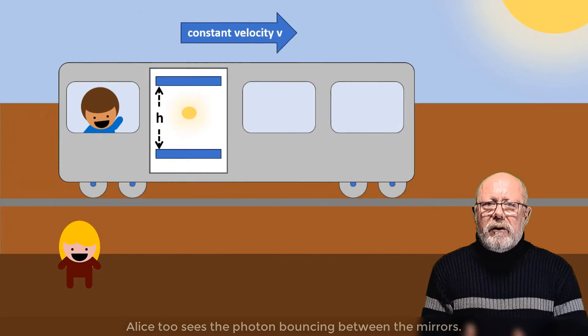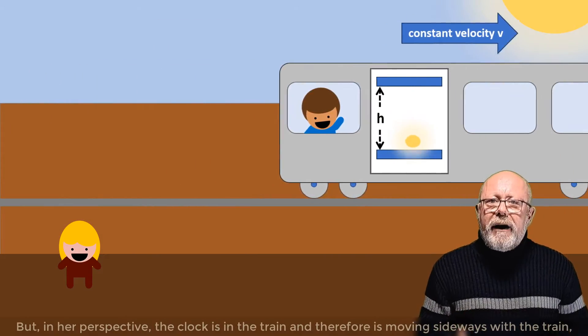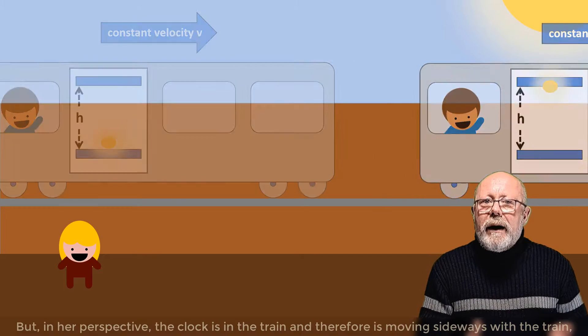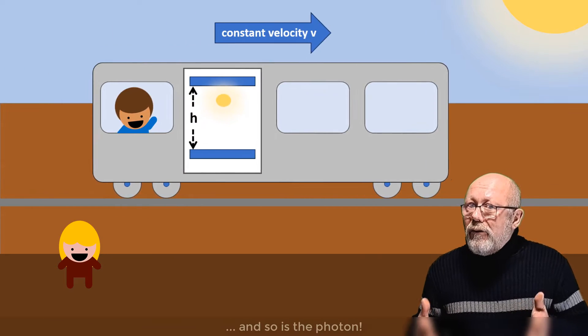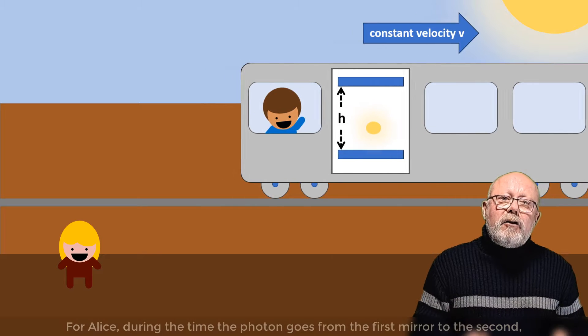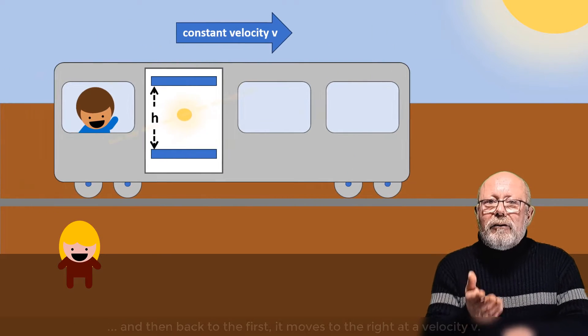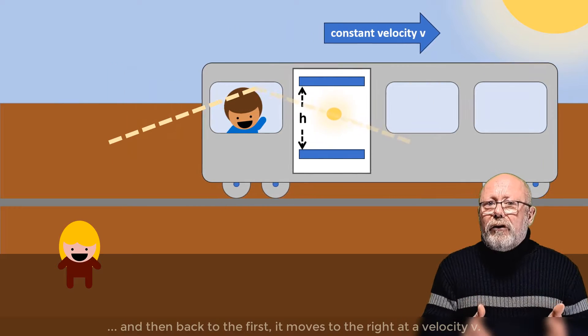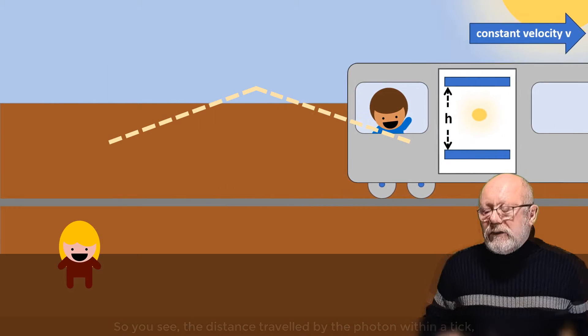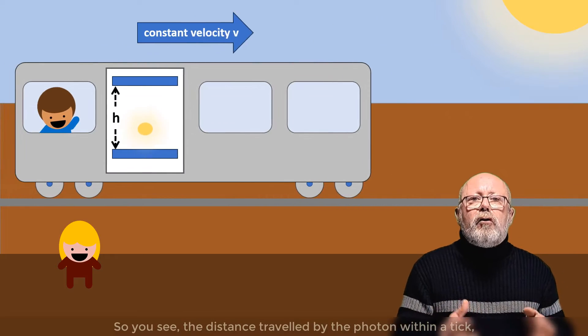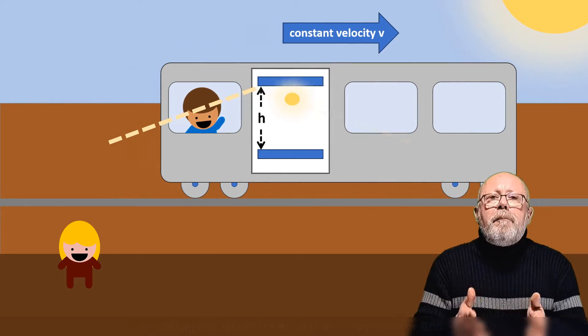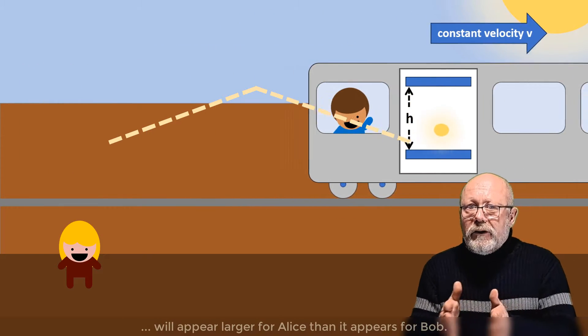Alice, too, sees the photon bouncing between the mirrors. But in her perspective, the clock is in the train, and therefore is moving sideways with the train. And so is the photon. For Alice, during the time the photon goes from the first mirror to the second, and then back to the first, it will have moved to the right at a velocity V. So you see, the distance travelled by the photon within a tick will appear larger for Alice than it appears for Bob.